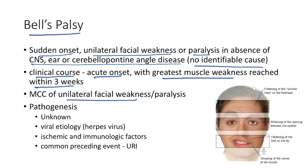The exact pathogenesis of Bell's palsy is not yet known. It is thought to be of viral etiology because herpes virus is implicated. Other factors include ischemic and immunologic factors. A common preceding event is upper respiratory tract infection.